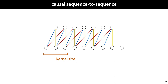In many settings, it's not actually reasonable to let the model look into the future. For instance, when you only have information from the future for your training data, but you don't expect to have it in production. In that case, it's important to wire up your sequence-to-sequence layer so that each output node only has connections to the corresponding input node and to the ones before it, but not to the ones after it. This is called a causal sequence-to-sequence layer.